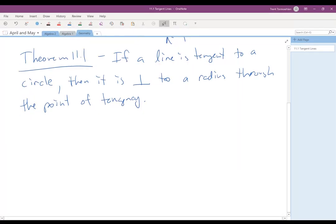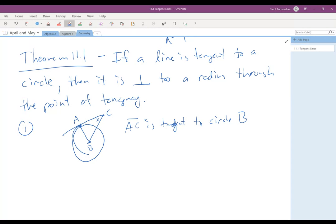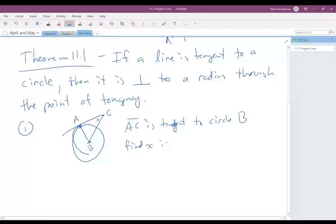So some examples of how that works. Maybe you'd have a problem like this where you have a circle and you know that point A is a tangent and you got circle B, we'll call this C. And so you're given that AC is tangent to circle B.